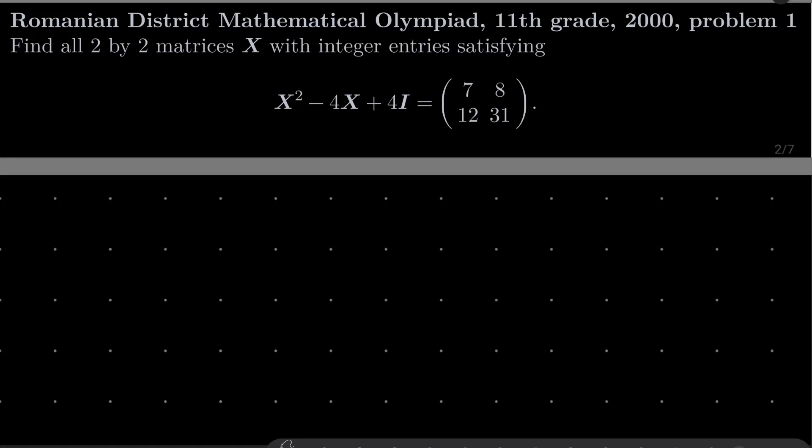We wish to find all 2 by 2 matrices X with integer entries satisfying the following equation: X squared minus 4X plus 4I equals the matrix [[7, 8], [12, 31]].